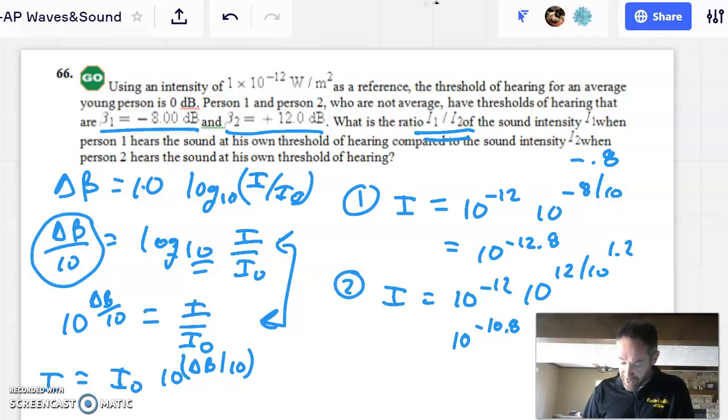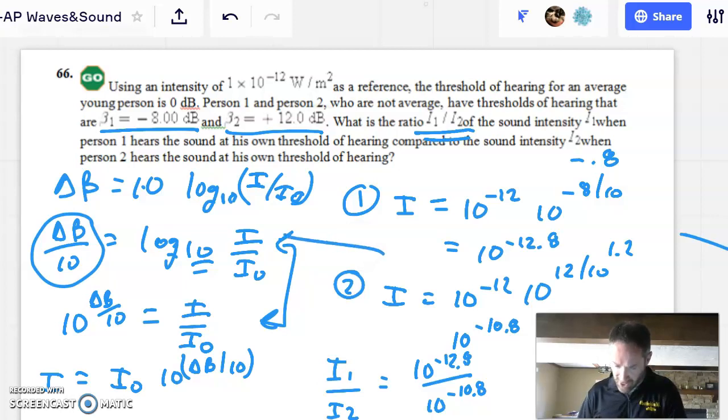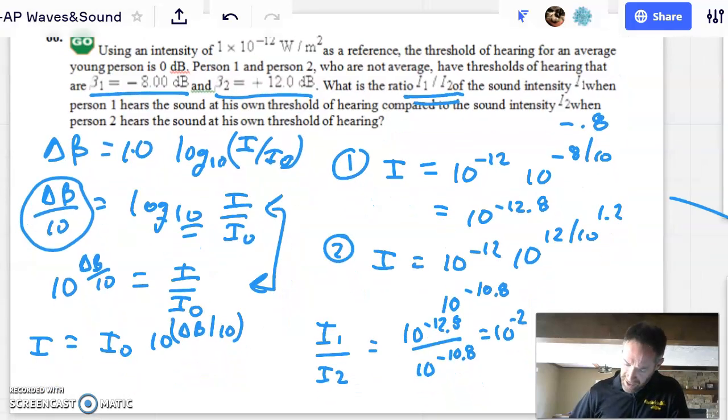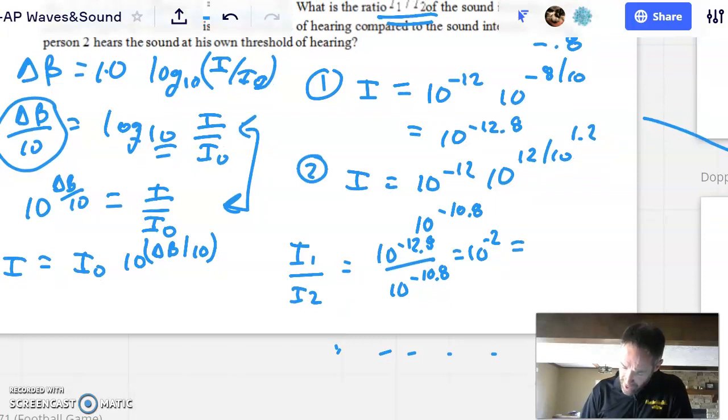Person two is going to be similar to that. Their intensity is going to be ten to the minus twelve times ten to the twelve over ten. And again, maybe you can clean it up without the use of your machine. This is going to be a ten to a one point two. And so, negative twelve positive one point two is going to be a ten to the negative ten point eight power. And so, if I were going to divide those the way it says, this intensity one by intensity two, that's going to be a ten to the negative twelve point eight over a ten to the negative ten point eight, which will give me an intensity of ten to the negative two. And so, all that is to say this, the person with the better hearing can hear something that is a hundredth as intense as the person with the lesser hearing.